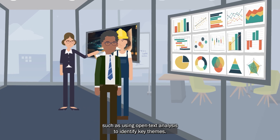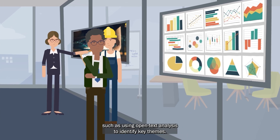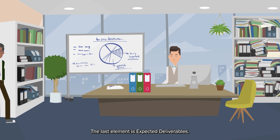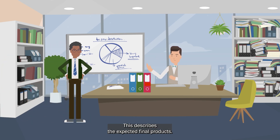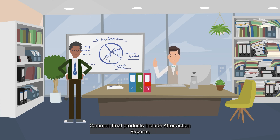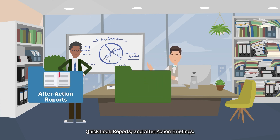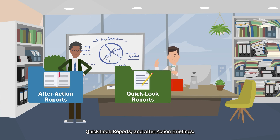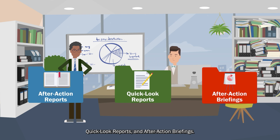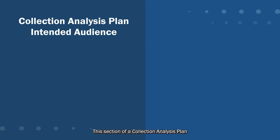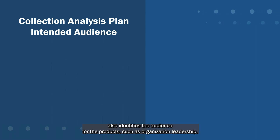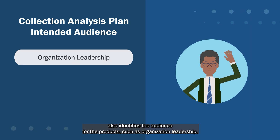The last element is expected deliverables. This describes the expected final products. Common final products include after-action reports, quick look reports, and after-action briefings. This section of a collection analysis plan also identifies the audience for the products, such as organization leadership, emergency management staff, or external partners.